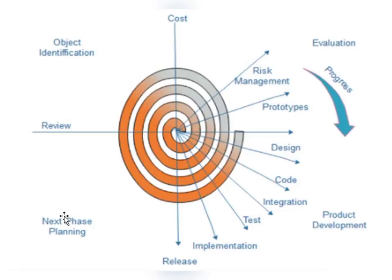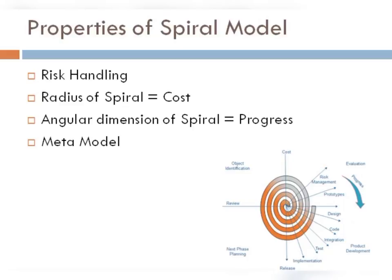In the final phase we do a review — where customers or project managers evaluate the work. There are certain properties of the spiral model. The first and most important property is risk analysis.